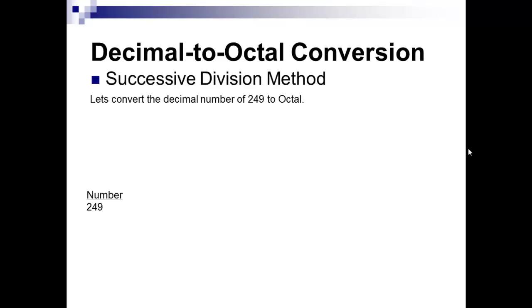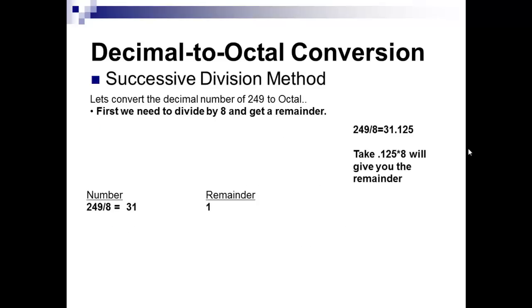Take the number 249 and divide by eight. 249 divided by eight equals 31.125. To get the remainder, take the decimal portion (0.125) and multiply it by the base (eight), which gives a remainder of one. So 249 divided by eight gives a whole number of thirty-one and a remainder of one.